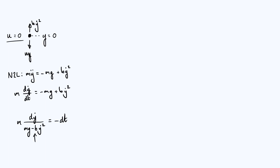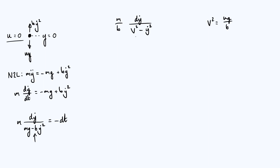Next I factor out a b from the denominator so that ẏ² has a coefficient of one, giving m/b · dẏ over (mg/b − ẏ²). I define a derived parameter V² = mg/b so we can replace that group of parameters with V². We call it V² because it represents the terminal velocity of the particle — see the previous video for why. We also define gamma = b/m, which means m/b = 1/gamma. After substitution the left-hand side simplifies, and the right-hand side is just minus the integral of dt.